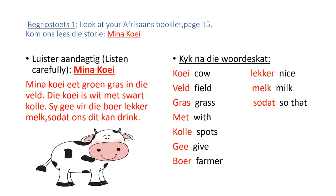Kiek na die woordeskat — look at the vocabulary. Kui: cow. Felt: field. Khras: grass. Met: with. Color: spots. Hear: give. Boor: farmer. Lekker: nice. Malk: milk. Sudat: so dat.